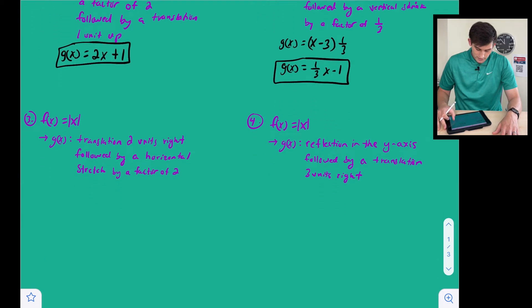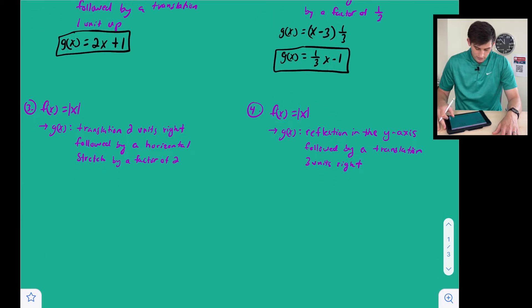All right, we'll scroll down a little bit, and now for number three, we're working with the parent function for an absolute value. So it says f of x equals absolute value of x, and we want to translate two units right, followed by a horizontal stretch by a factor of two. So now we're working with horizontal.